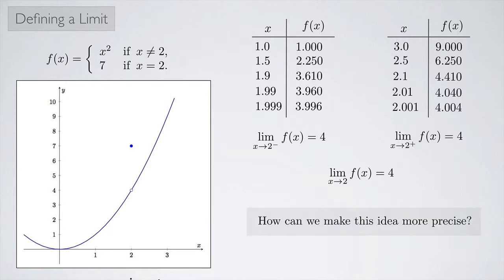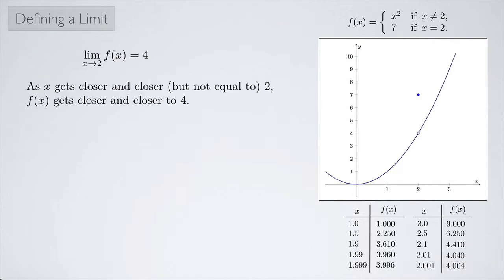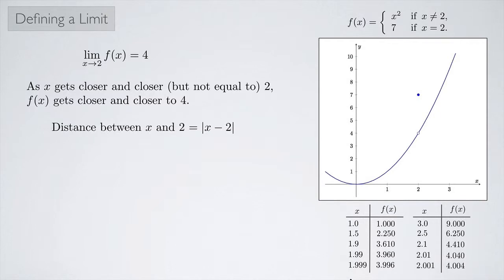How can we make this idea a little more precise? We're looking at the limit as x approaches 2 of f(x) equals 4, and we see that as x gets closer and closer but not equal to 2 — either from the left or the right — f(x) gets closer and closer to 4. We're talking about distance. The distance between x and 2 can be represented as the absolute value of x minus 2.